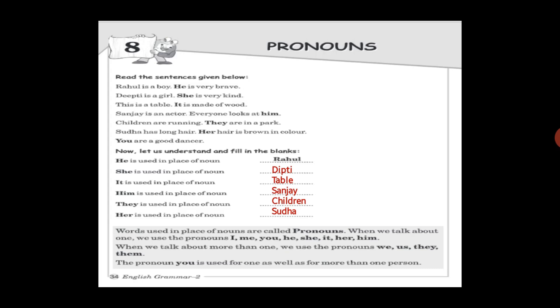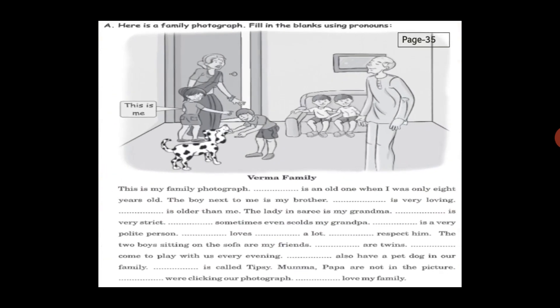Now let's move to page 35 — fill in the blanks using the correct pronoun with a family photograph. 'This is my family photograph — dash is an old one when I was only eight years old.' For 'photograph', it's a non-living thing, so use 'it'. 'The boy next to me is my brother — dash is very loving.' For 'my brother', use 'he'. 'Dash is older than me' — again 'he'.